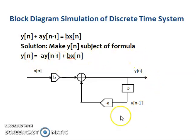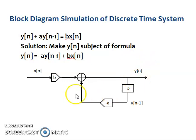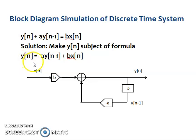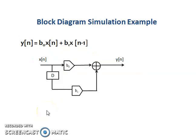To implement the system in a block diagram, we use the previously discussed blocks. We have x(n) as our current input and y(n) as our current output. The current input x(n) is scaled up by b, and this is added to a delayed version — the past output y(n-1) — multiplied by -a. Adding these together gives us y(n) = -a·y(n-1) + b·x(n).